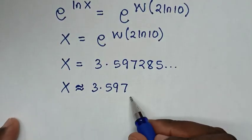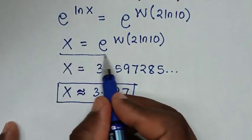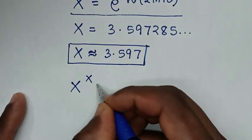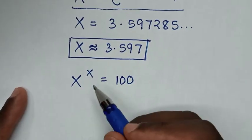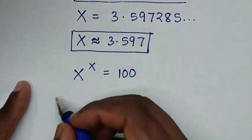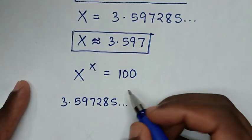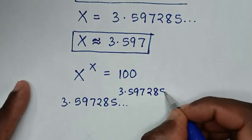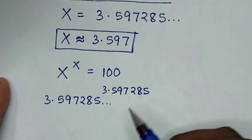Now, to check if our answer is correct — this is our final answer, or you can answer in this way. To check if our answer is correct, from our problem which is x to the power of x is equal to 100, we substitute the value of x. The exact form is this one, which is 3.597285 and so on. If we substitute this answer for x, it is equal to 999.999995.